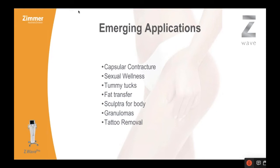Some emerging applications we're going to talk about include capsular contracture, which we've developed in our office. I haven't tried it for sexual wellness, but I understand people have treated the perineal body and it has helped increase blood flow and sexual wellness. It's certainly helpful after tummy tucks that have venous congestion. After fat transfer to smooth everything out, it's used after Sculptra to distribute it more consistently in the subcutaneous space. It's very well used for granulomas like fat necrosis in our office. Tattoo removal is something new we're going to talk about.